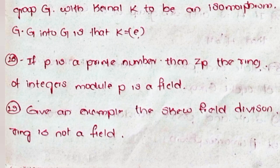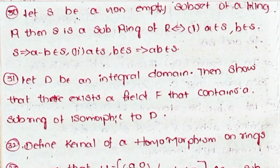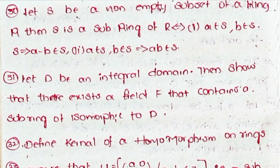Twenty-nine, give an example of a skew field (division ring) that is not a field. Thirty, let S be a non-empty subset of a ring R, then S is a subring of R if and only if: (i) for a, b in S, a - b belongs to S; and (ii) for a, b in S, ab belongs to S.